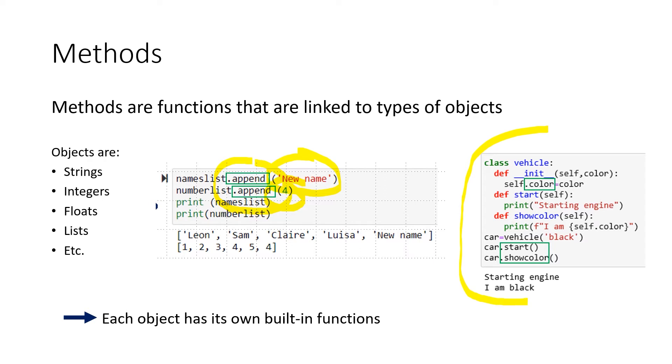And here on the right example, this looks maybe a little bit complicated for now, and we actually also don't focus that much on object-oriented programming in Python. But here you can see a lot of different methods are used, and they're always called on an object.